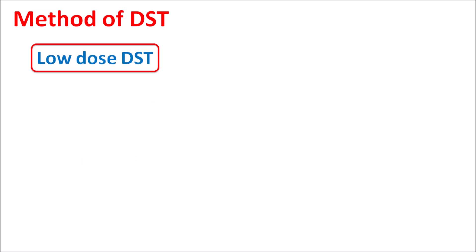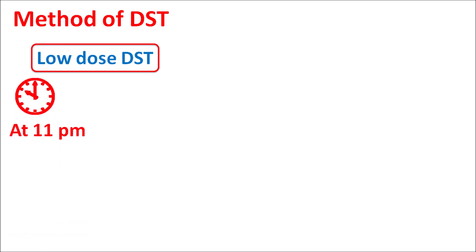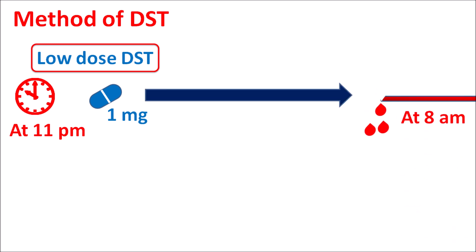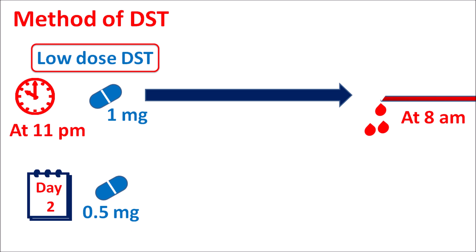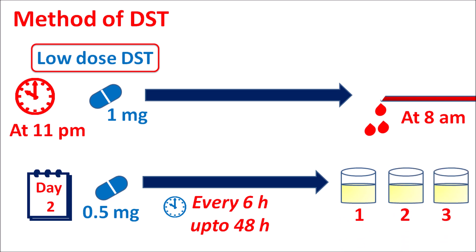In the low dose dexamethasone suppression test, two methods can be used. In the overnight method, dexamethasone is given at 11 pm at a dose of 1 mg, and a blood sample is collected at 8 am to estimate cortisol levels. In the standard method, a urine sample is collected: dexamethasone is given at a dose of 0.5 mg repeated every 6 hours for up to 48 hours — a total of 3 days. Urine samples are collected on days one, two, and three and pooled to estimate cortisol levels.